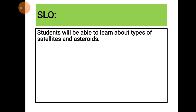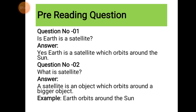Now it's time for pre-reading questions. Question number one: Is Earth a satellite? Yes — Earth is a satellite which orbits around the sun. Question number two: What is a satellite? A satellite is an object which orbits around a bigger object.